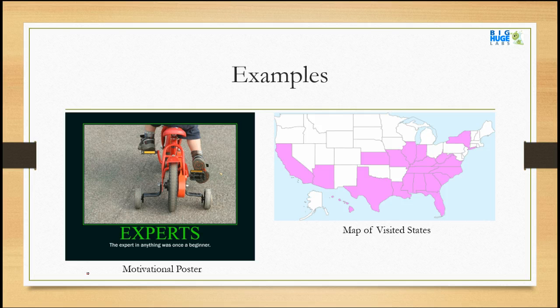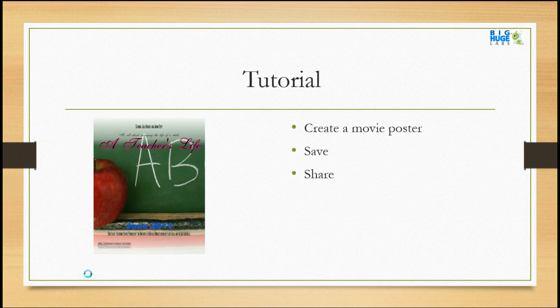Here is a map of visited states. This option allows the student to highlight states in a specific color to show visited or unvisited states — it would be a great tool for students to learn national geography. Next, I'm going to teach you how to create a movie poster, how to save, and then how to share.